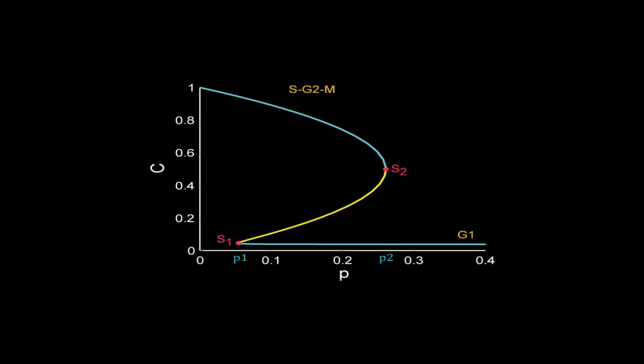In G1 phase, P remains high, say P equals 0.4. In this condition the system is monostable and C remains very low. As the cell grows in the G1 phase, P drops. But as long as P is bigger than P2, the cell stays at a stable steady state with low C. But below P2, the system is in the bistable zone.